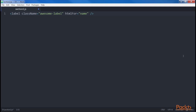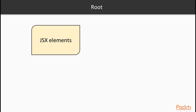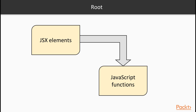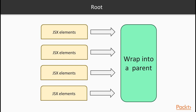The next difference is style. The style attribute does not accept a CSS string as the HTML parallel does, but it expects a JavaScript object where the style names are camel cased. Moving on to the next difference: root. Since JSX elements get translated into JavaScript functions, and you cannot return two functions in JavaScript, whenever you have multiple elements at the same level, you are forced to wrap them into a parent.